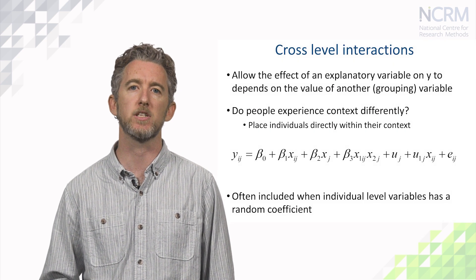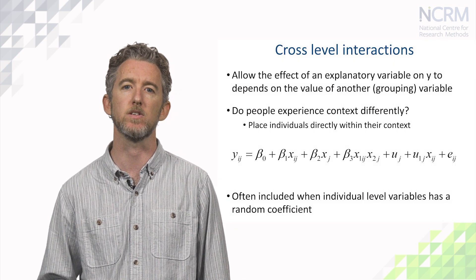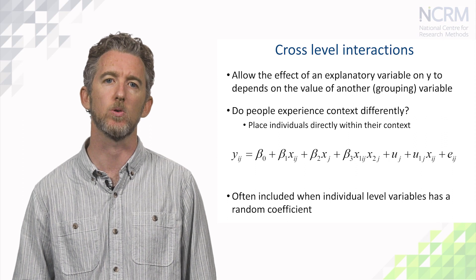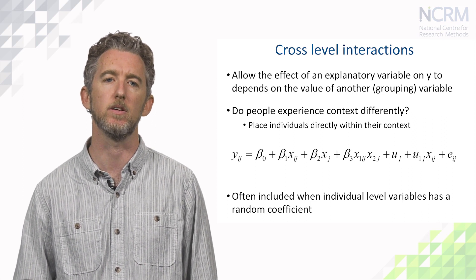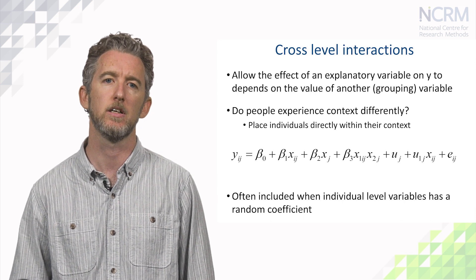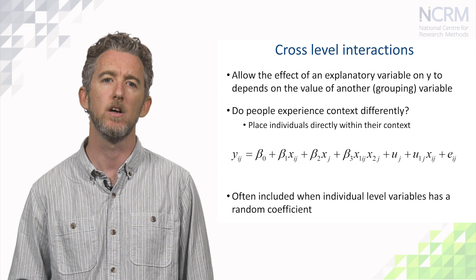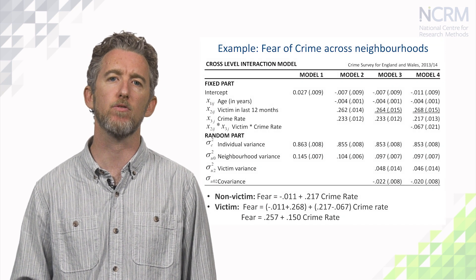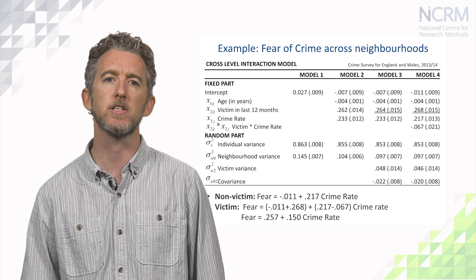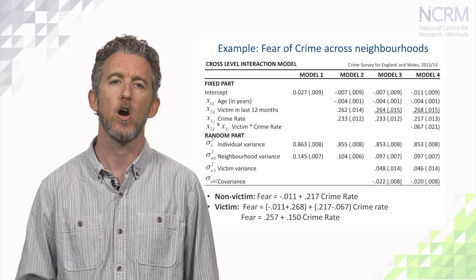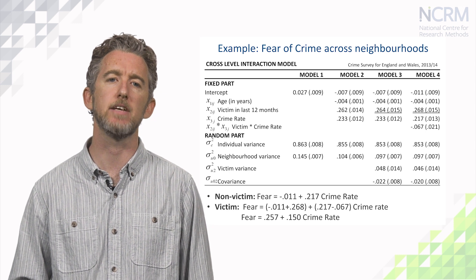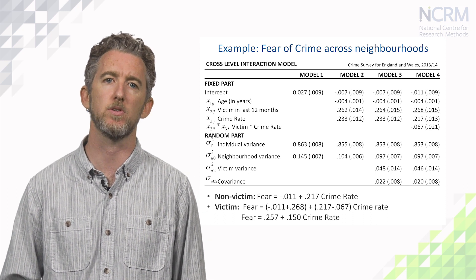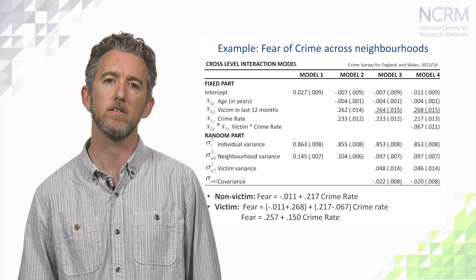Finally, we can incorporate cross-level interactions to more directly model how individual-level relationships are moderated by features at the group level. This is the exact same logic as interaction effects in single-level regression models, so the interaction between x1 and x2 is just x1 by x2. The only difference here is that x1 and x2 can be from different levels of analysis. Model 4 extends our analysis by also including the interaction term between individual victim status and the area crime rate, which is identified as significant and negative. This suggests that for victims of crime, the positive association between the crime rate and fear is weaker than it is for non-victims.